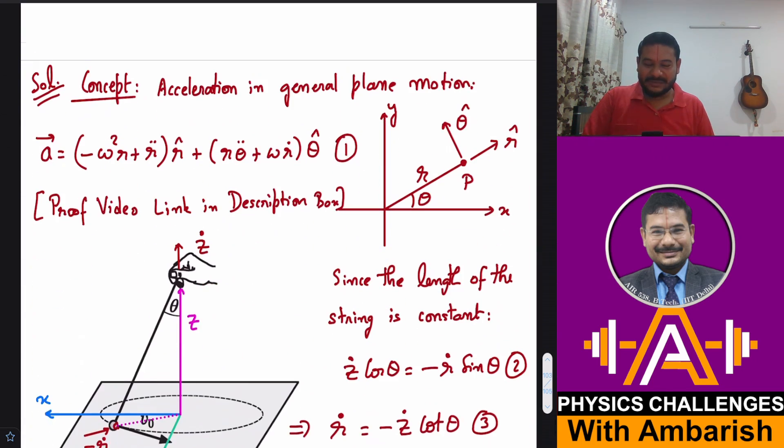So the concept that I am going to use in this video, I have already proved that concept in another video and I will be giving the link to that video in the description box as well as in the recommended videos at the end of this video. So for now I will be just using that as a fact. So what's the concept here? Acceleration in general plane motion is given as a⃗ = -ω²r + r̈ r̂.